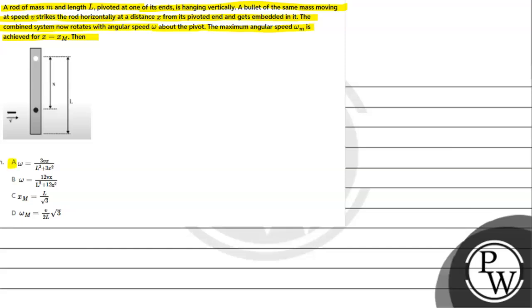Option A given: omega equals 3VX upon L square plus 3X square. Option B: omega equals 2LVX upon L square plus 2LX square. Option C: X_M equal to L by root 3. Option D: omega_M equal to V by 2L root 3. So for this question, the key concept we need to understand...